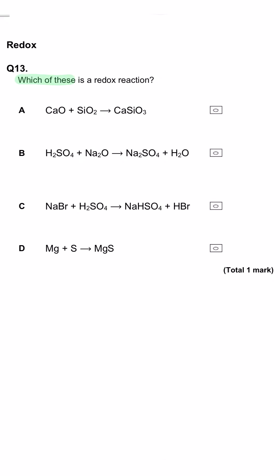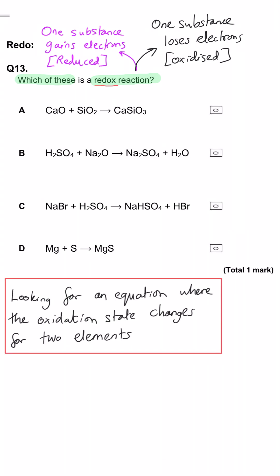Which of these is a redox reaction? Well, in a redox reaction, the oxidation states of two substances change. One goes up and one goes down. So we need to look for that change.